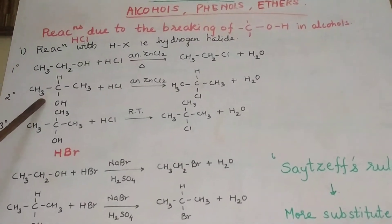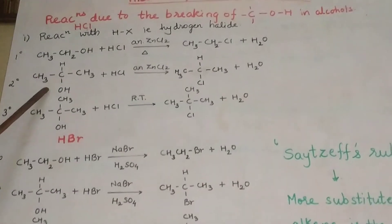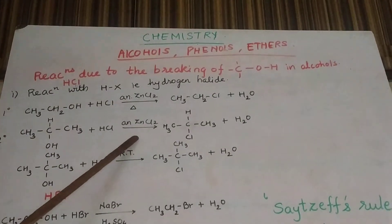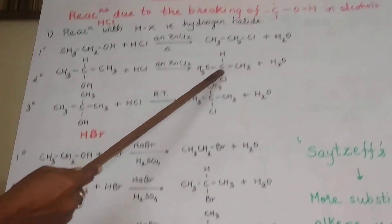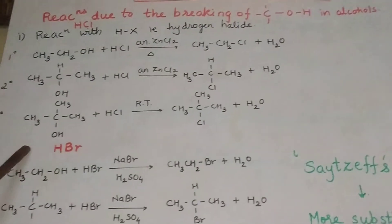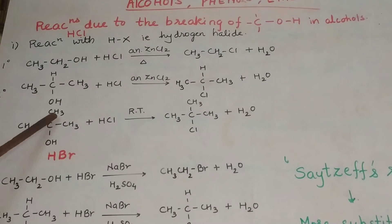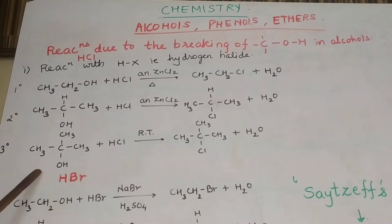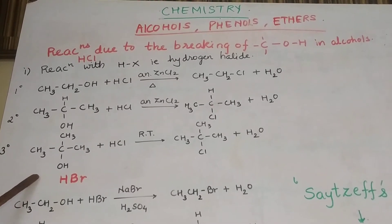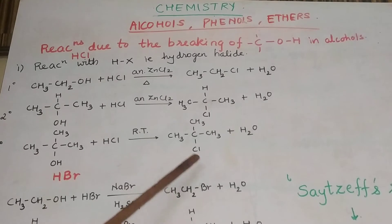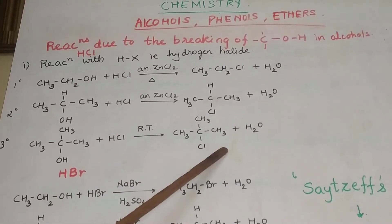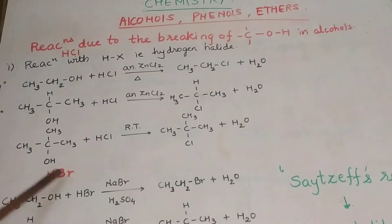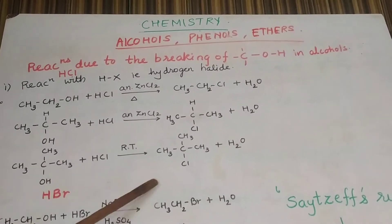For a secondary alcohol — propane-2-ol — when treated with anhydrous ZnCl2 and HCl, it doesn't require heat because secondary alcohols are more reactive than primary alcohols. It forms 2-chloropropane with water. In case of a tertiary alcohol — 2-methylpropan-2-ol — when treated with only HCl at room temperature, tertiary alcohols are more reactive and don't require ZnCl2. It forms 2-chloro-2-methylpropane and water. In all three reactions, OH is replaced by Cl — the C-O bond is breaking.